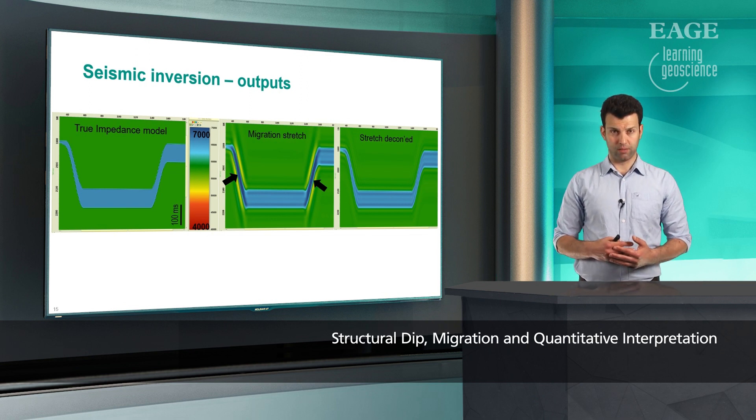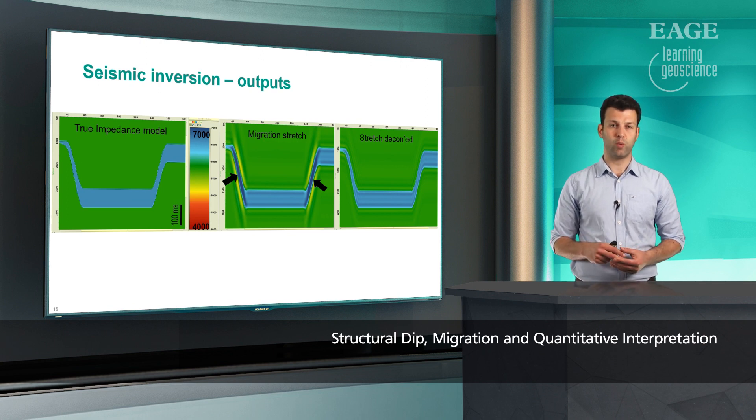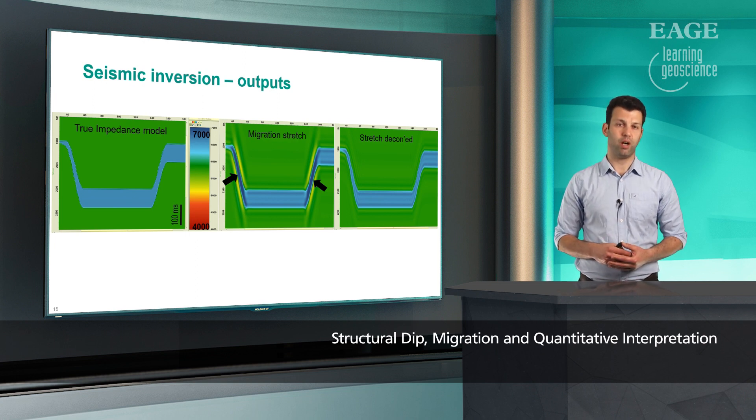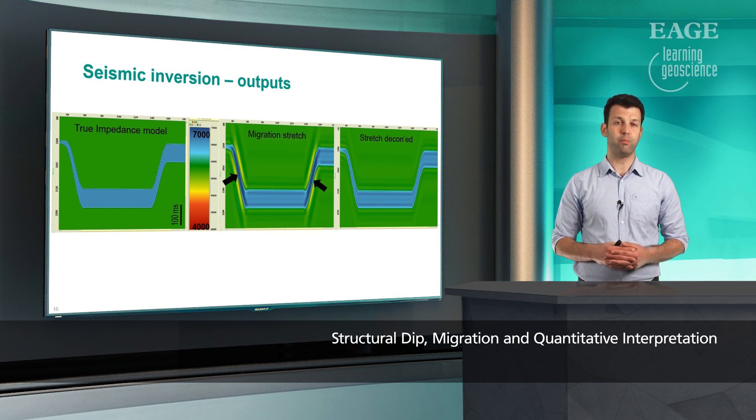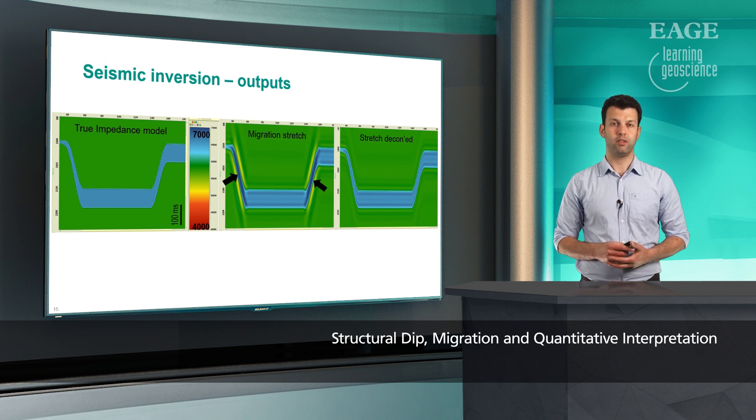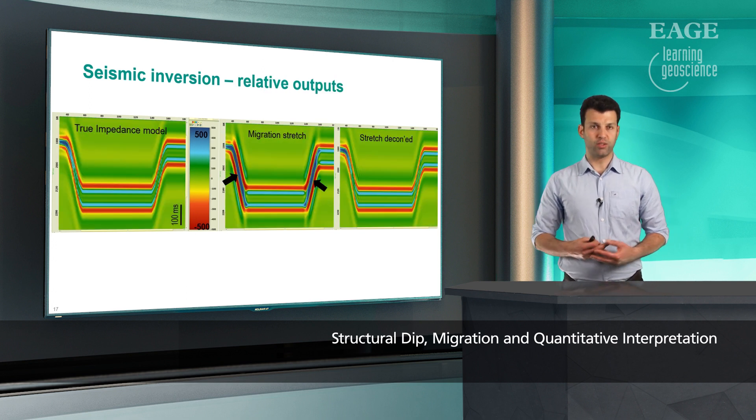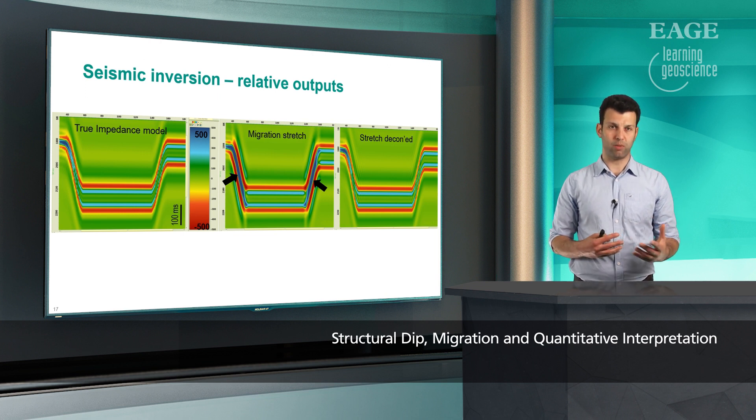The impact is more pronounced when we invert that image to impedance properties. So again, you see the middle image suffers from those biases over dipping reflectors, and the corresponding impedance is biased or shows as harder properties. After deconvolution, the estimated impedance is very similar to the one which is the reality effectively, that is the image on the left-hand side.